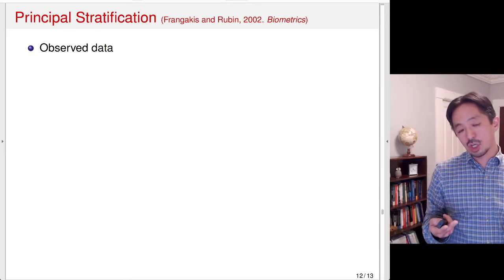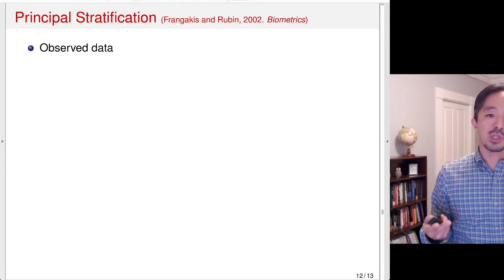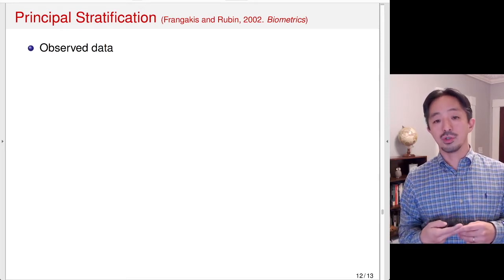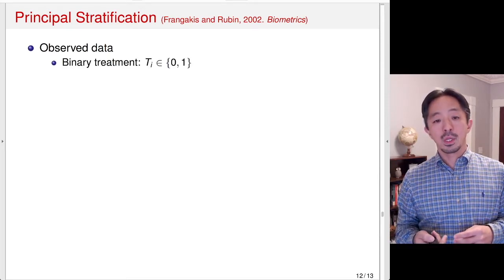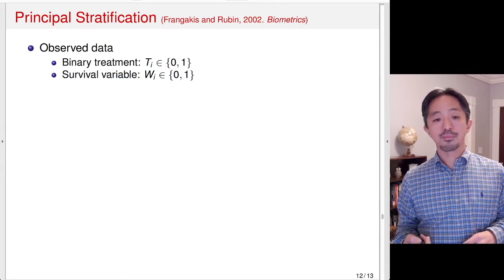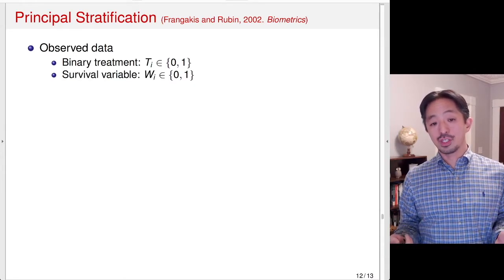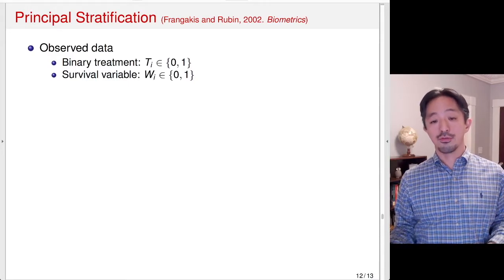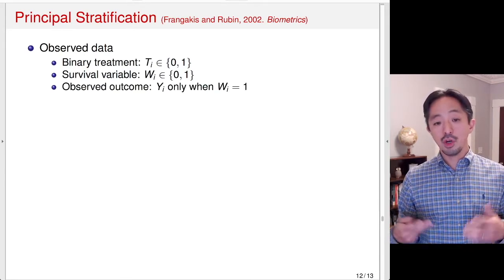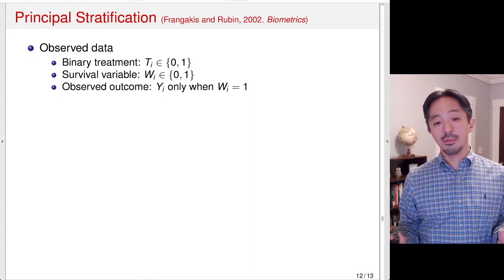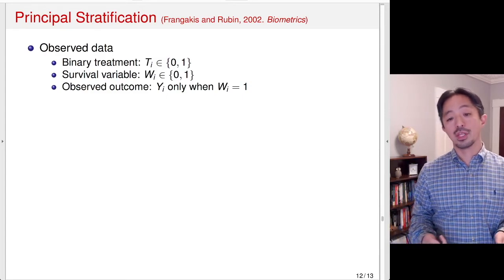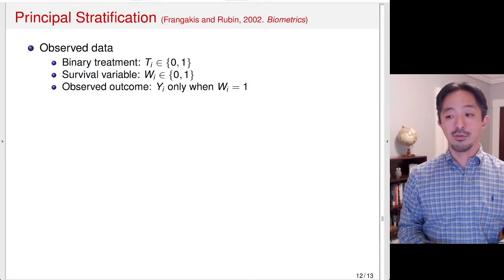So how might we address this truncation by death problem using the potential outcomes framework? We're going to use something called principal stratification, which was originally introduced by Frangakis and Rubin. What we observe is a binary treatment T, which is either 1 or 0. We also observe the survival variable W, which equals 1 if a patient survives and 0 if not. The observed outcome is only observed when the patient survives — that is, when W equals 1. So when W equals 0, the cholesterol level is not defined.